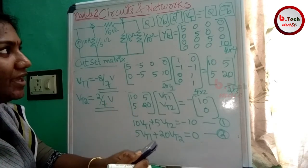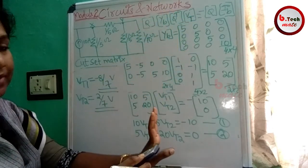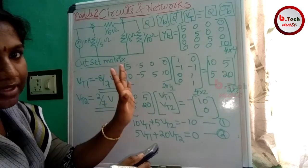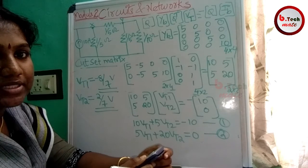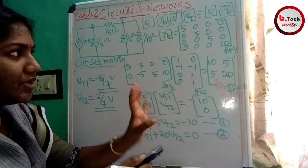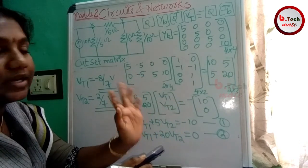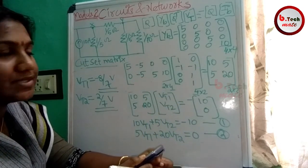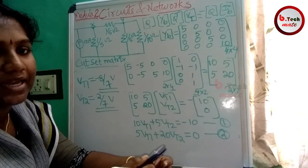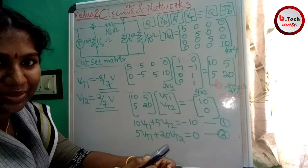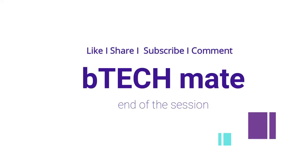Vt1 and Vt2 have been found by solving the KCL equation. Similarly, the KVL equation can be solved to find the loop currents and node voltages. We have solved the final answers using both the KCL and KVL equations for this circuit problem.